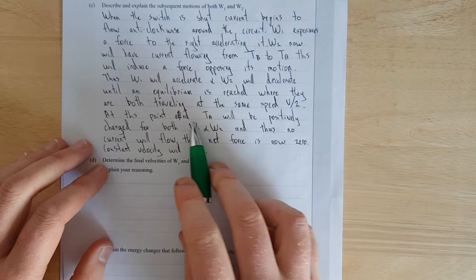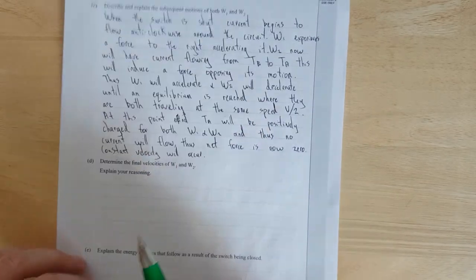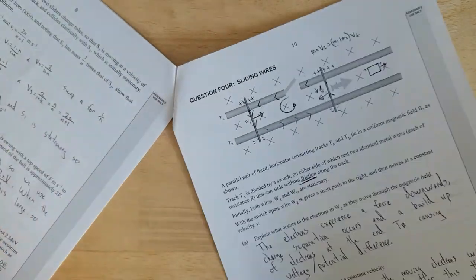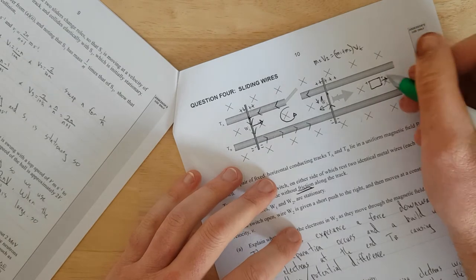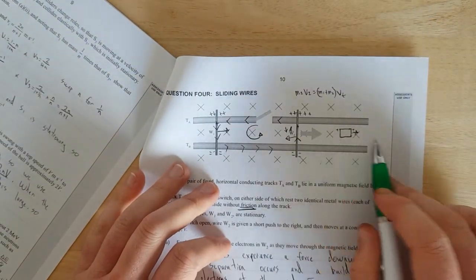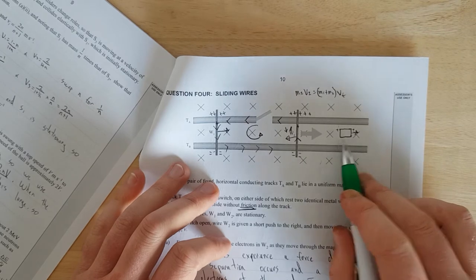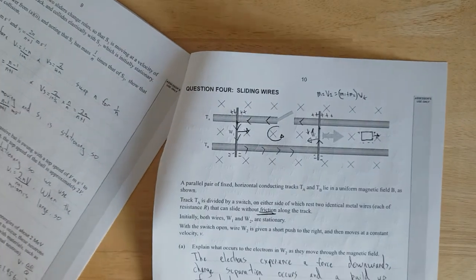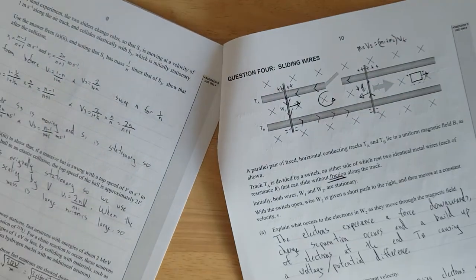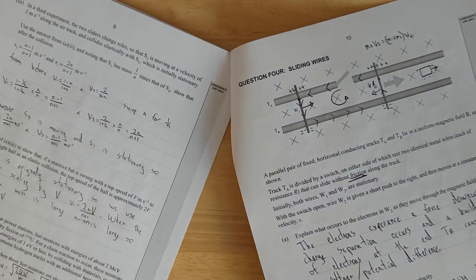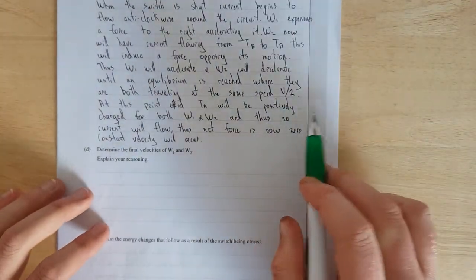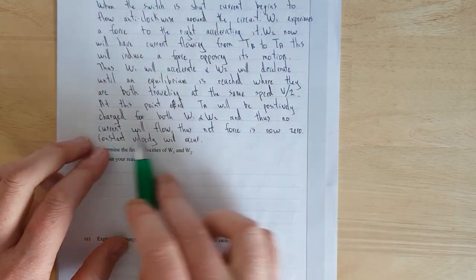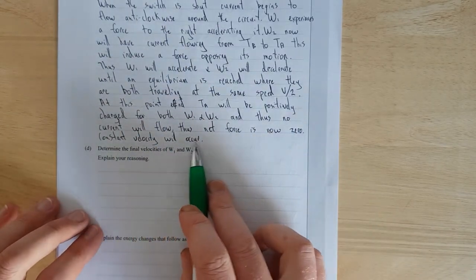At this point, TA, or at this point, at this point, end TA. So basically, both ends of the wire will become positively charged. And it's essentially like a box, I mean, it's in lots of textbooks. When you have a box falling through a magnetic field, one side of the box becomes positively charged, the other side of the box becomes negatively charged. You get charge separation, but no current, because there's no loop outside the magnetic field for current to flow. Right. At this point, it will probably charge for both wire one and wire two, and thus no current will flow. Thus, net force is now zero. Constant velocity will occur.